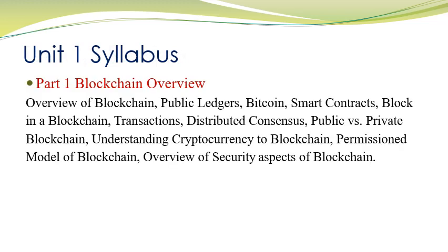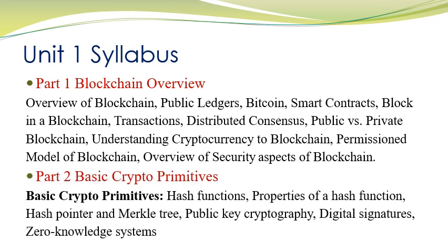Unit one syllabus is divided into two parts. The first part contains the blockchain overview and the second part contains the security aspects of blockchain. In part one so far we have studied the overview of blockchain, public lectures, Bitcoin, smart contracts, and block in a blockchain. In today's session we will discuss transactions and distributed consensus. The security aspects will be covered in coming sessions.